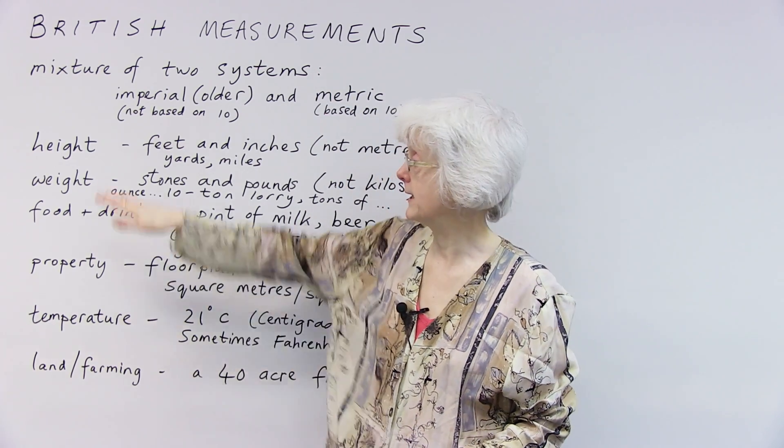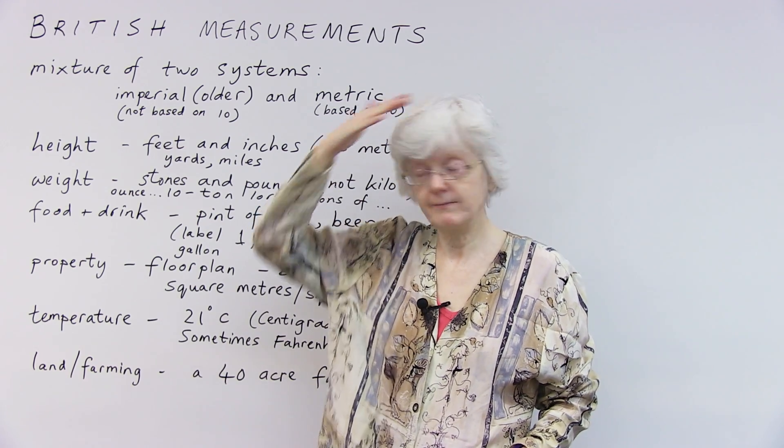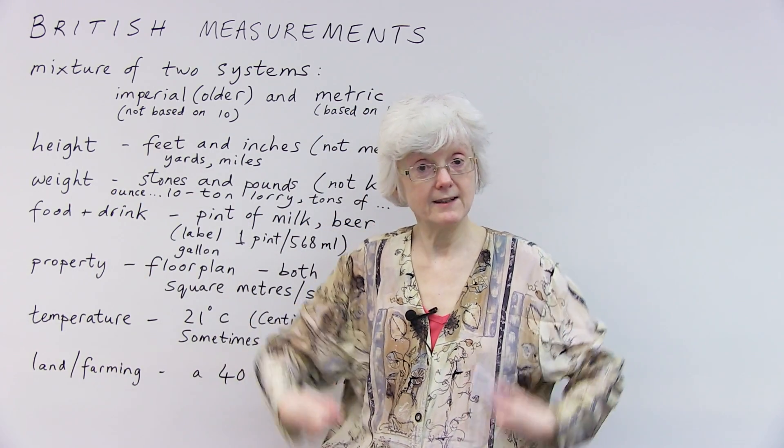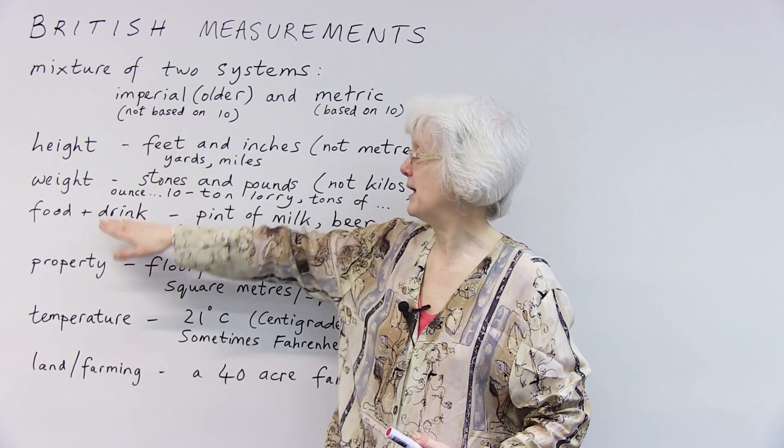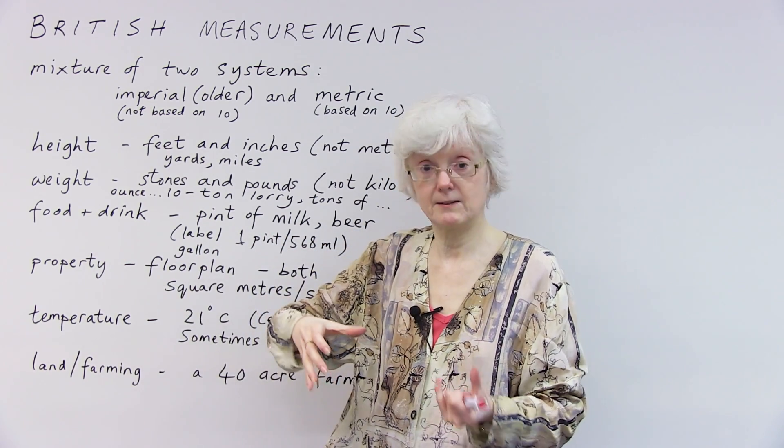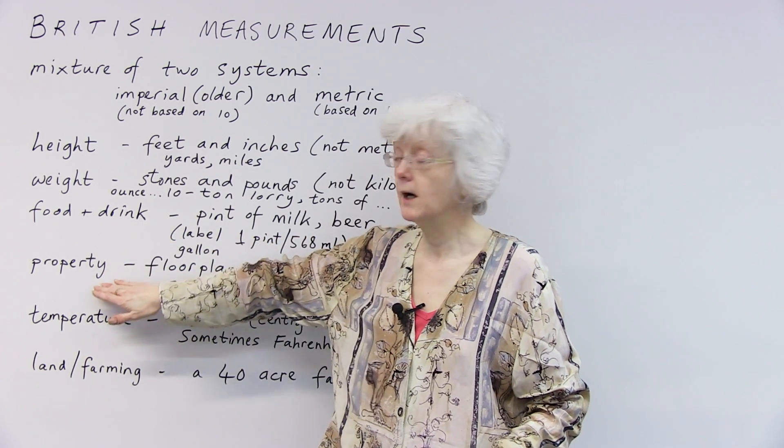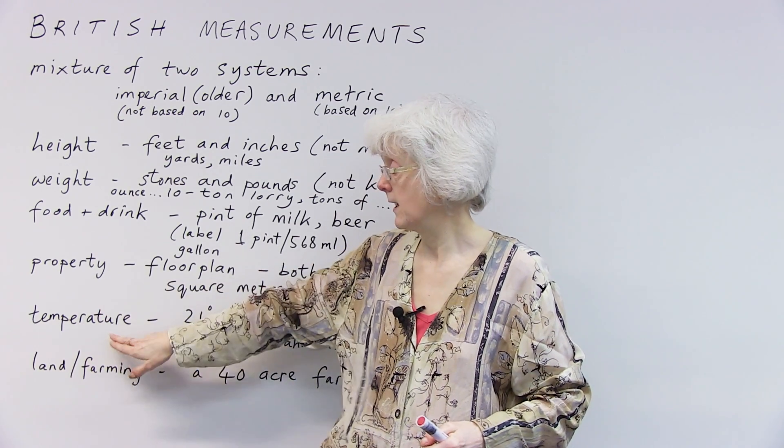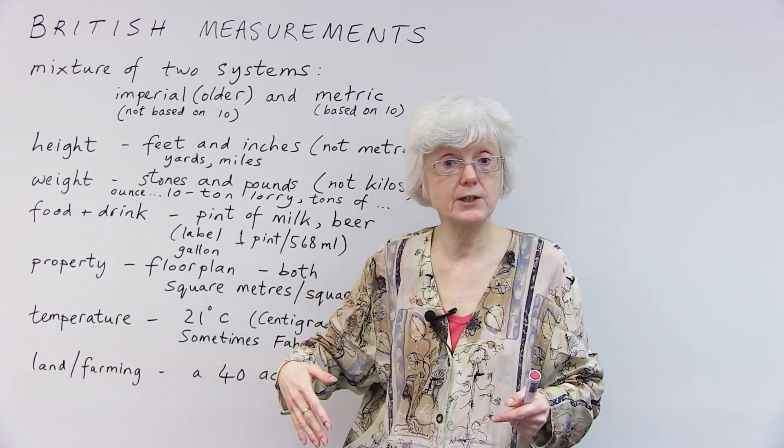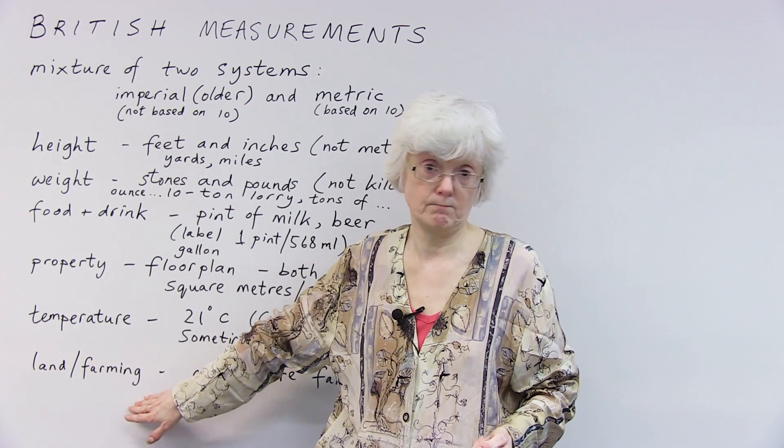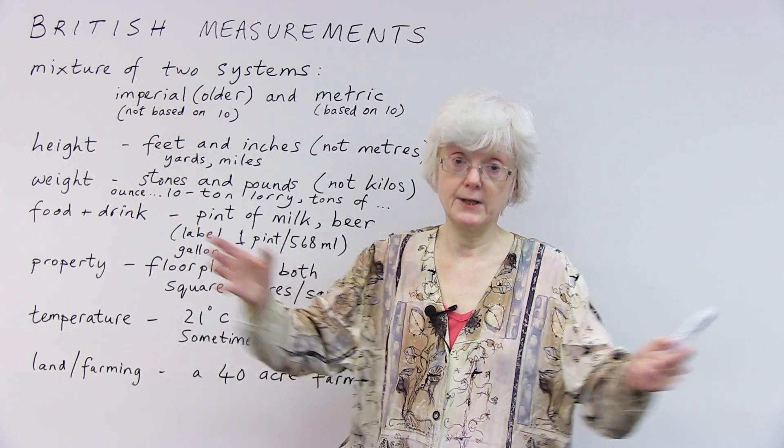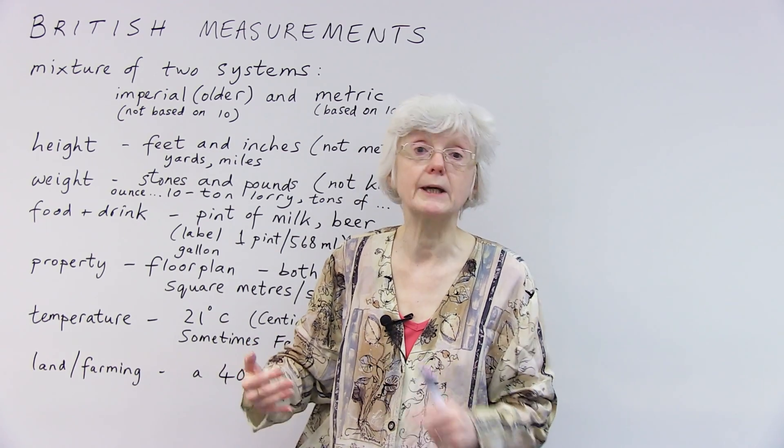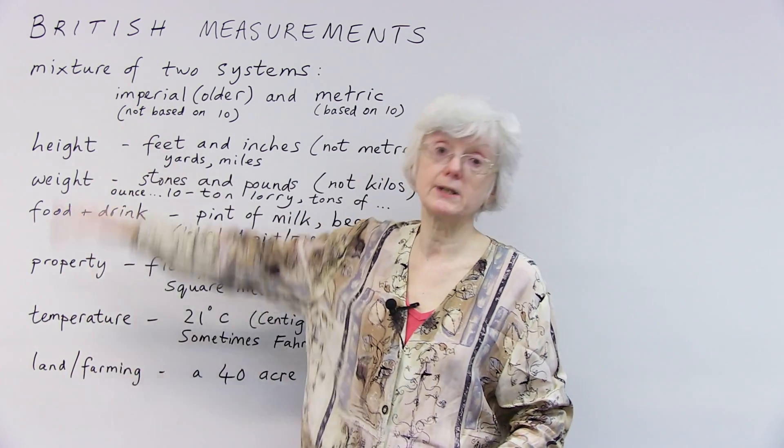The way that we measure things like height, how high somebody is. In my case, not very high. Weight, how much people weigh. And again, in my case, not very much. How food and drink are weighed, the volume, the quantity. Property, like space in houses, the space, the shape of a room, how big a room is. Things like temperature, how hot or cold it is in a room. And things like in farming, land, the amount of space that belongs to a farm for agriculture or dairy farming or whatever.